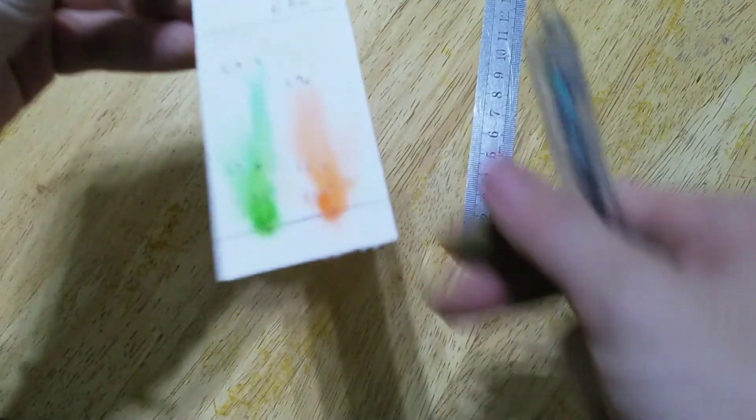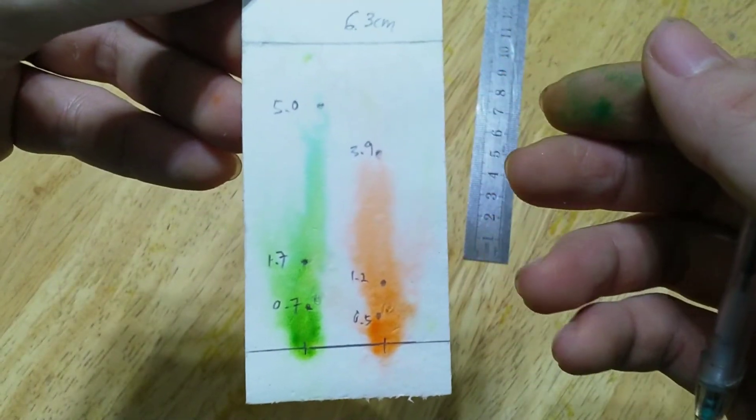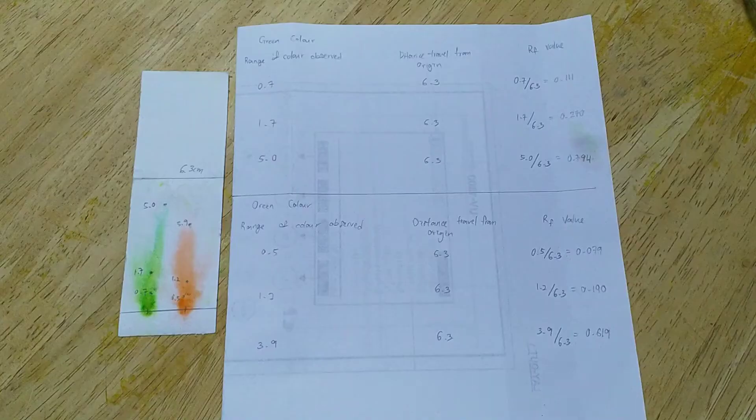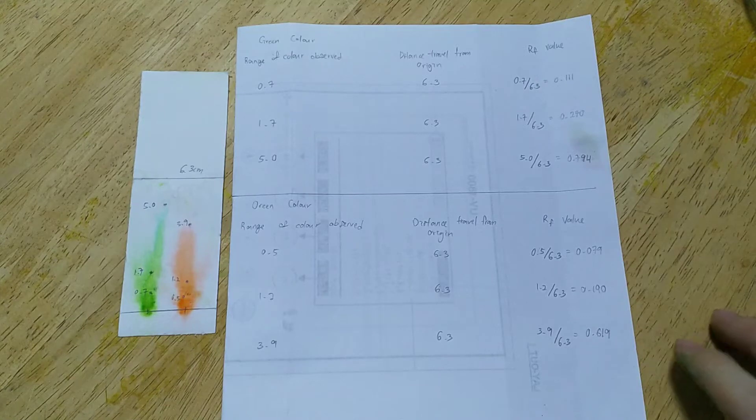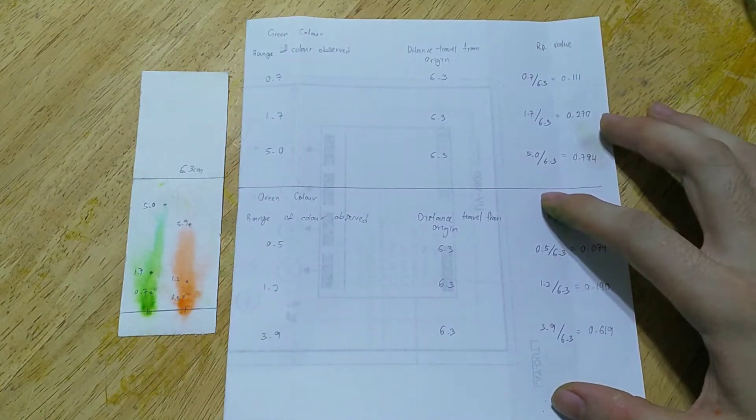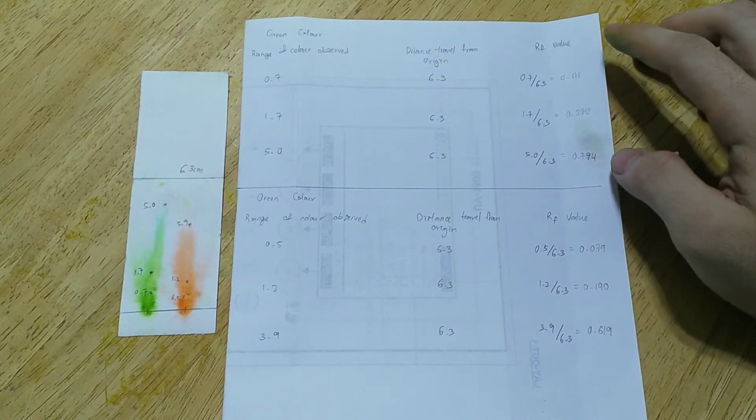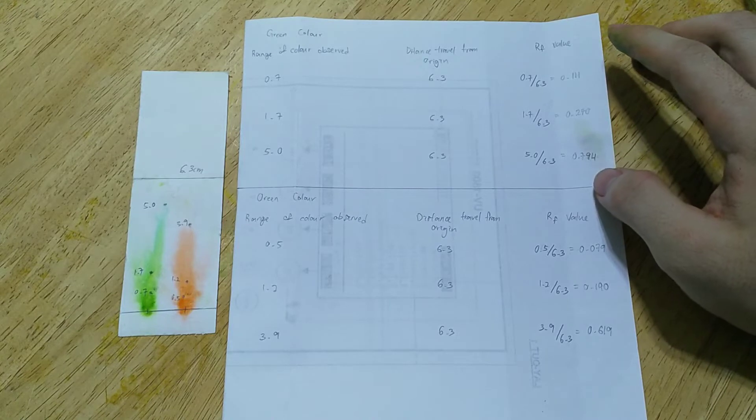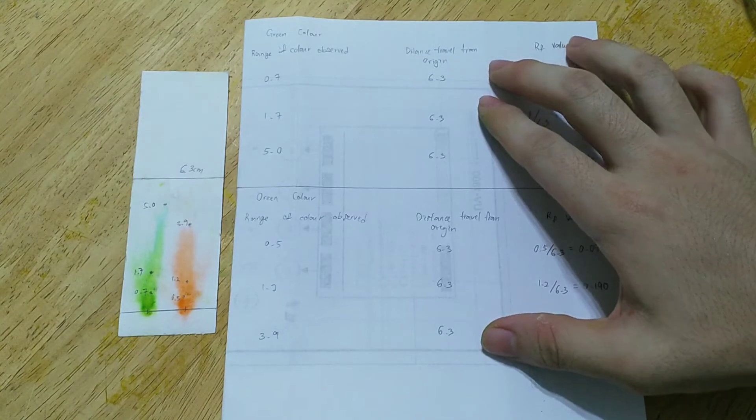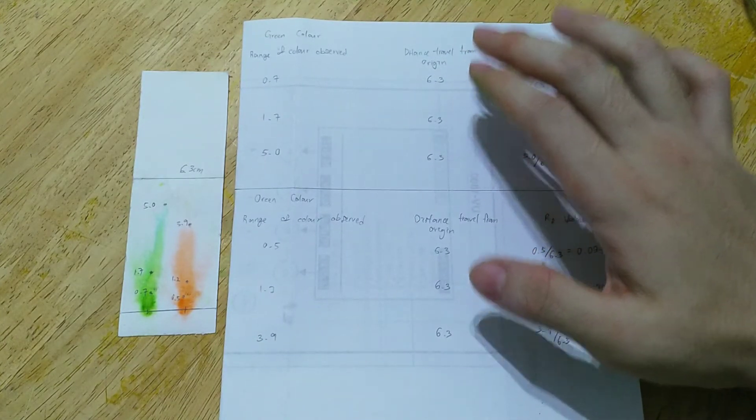And now with all the readings we can more easily calculate the RF value. So let me show you the RF calculation. This is the calculation for the RF value. So this upper part is the green color and the bottom part is the orange color. RF value I don't put the unit since the RF value is the calculation for ratio of the distance. So the distance traveled from origin is the same 6.3cm.